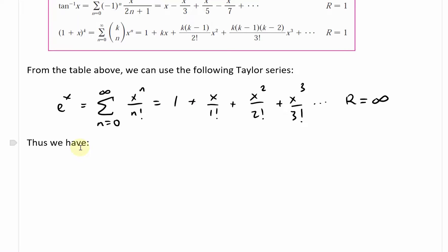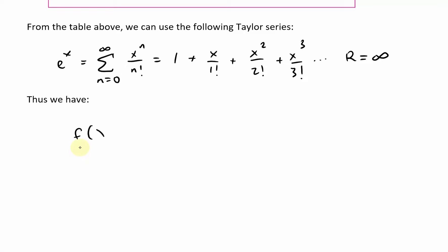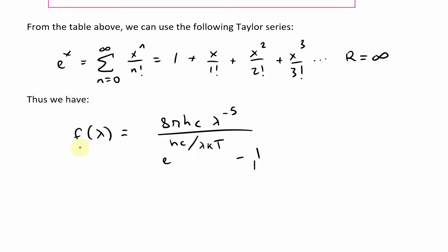Now we apply this to Planck's law. Planck's law is f(lambda) equals 8 pi hc times lambda to the power of negative 5, divided by e to the (hc over lambda kT) minus 1. We approximate the exponential function with the Taylor series, letting x equal hc over lambda kT.